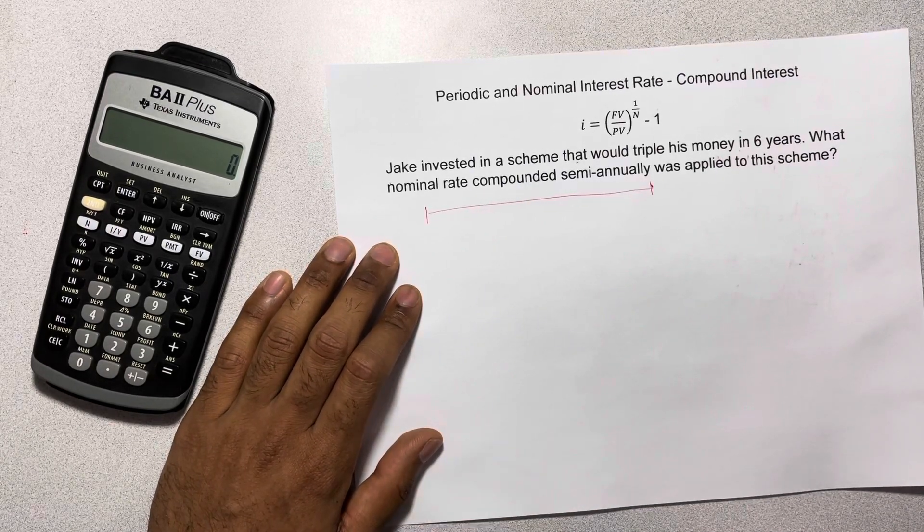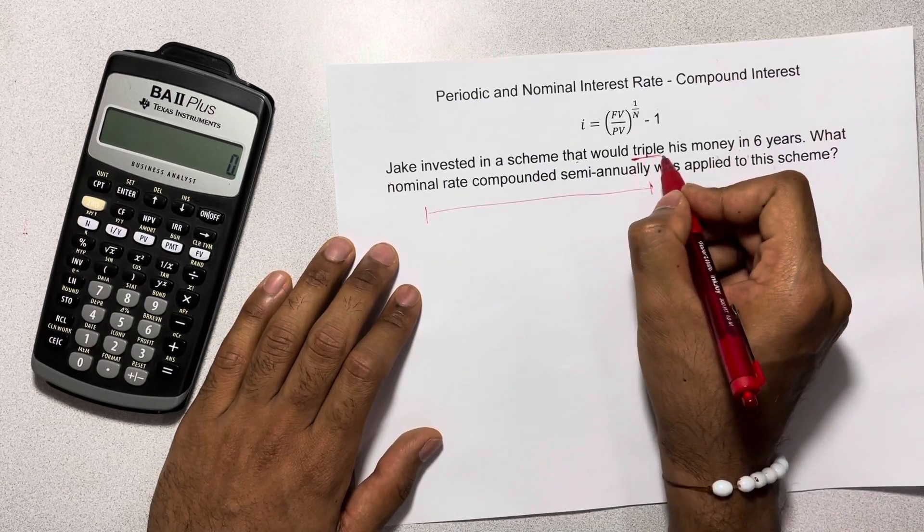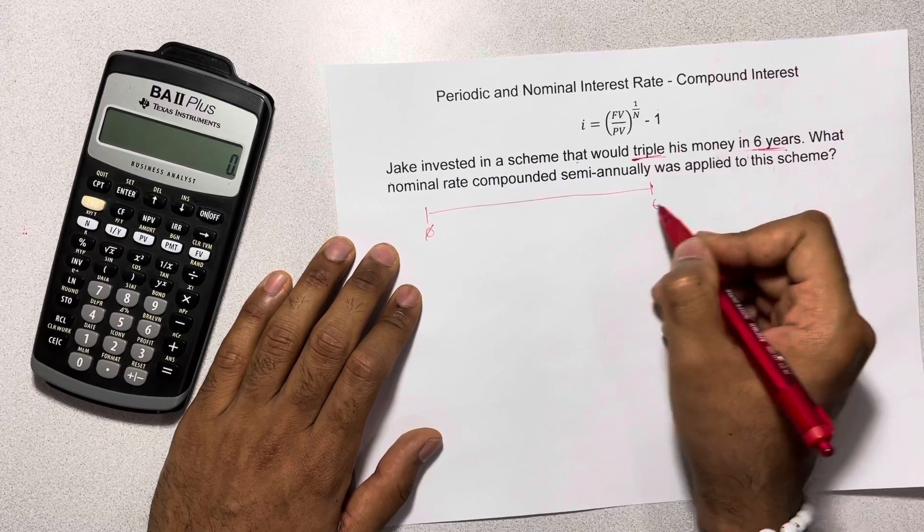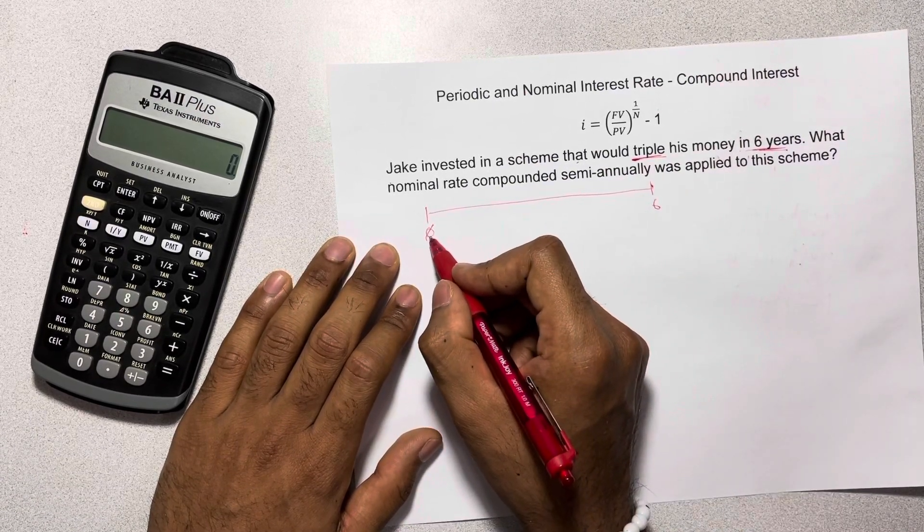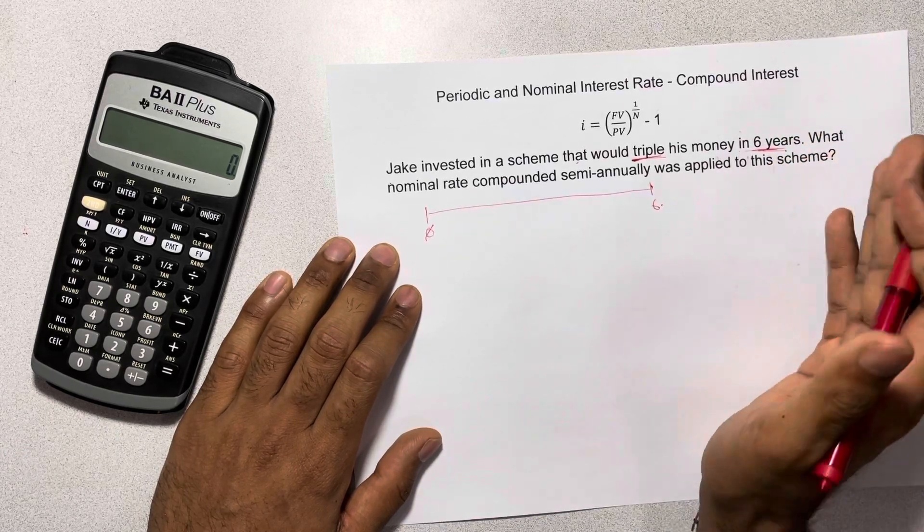Now we don't know exactly how much he invested, but what we do know is that his money tripled in just 6 years. So he invested at year 0 and at the end of year 6, he had tripled his money.